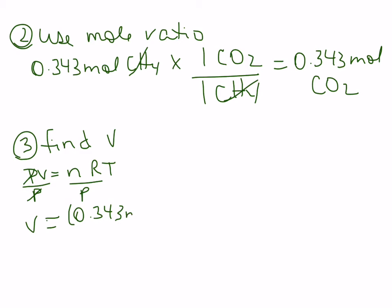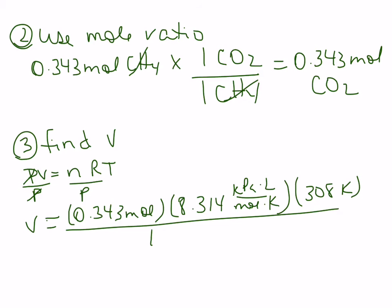So we have 0.343 moles. That's our R value 8.314 kilopascals dot liters over moles dot Kelvin times 308 degrees Kelvin all over 100 kilopascals. So our kilopascals cancel, our Kelvins cancel, our moles cancel, so we're left with units of liters. And when we do that on the calculator we get 8.8 liters. So if we start with 5.5 grams of methane we can expect to get 8.8 liters of carbon dioxide.